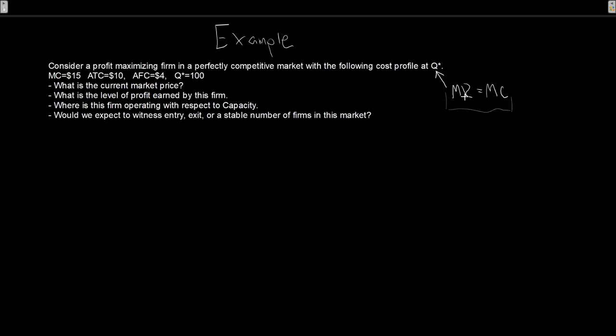Q star occurs where marginal revenue equals marginal cost. Specifically, what is marginal revenue? Marginal revenue is price equals average revenue equals marginal revenue. We're saying that all of these equal marginal cost. Marginal cost? I know that guy.